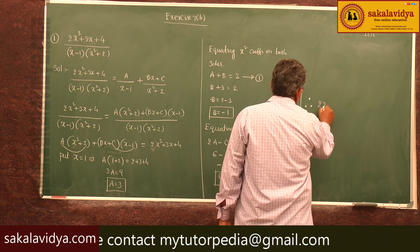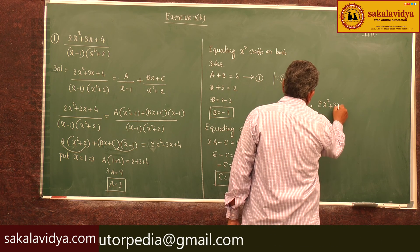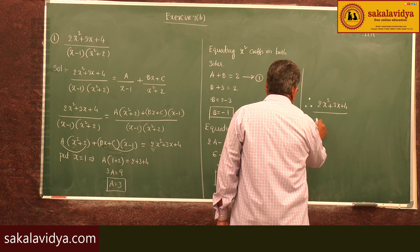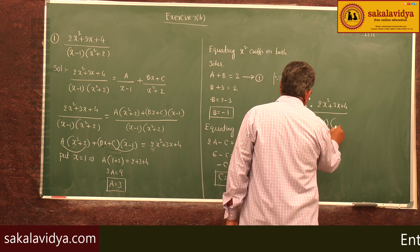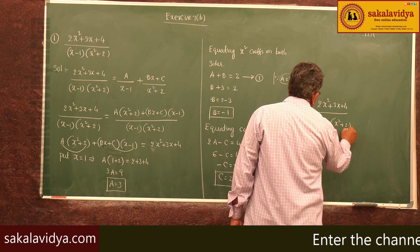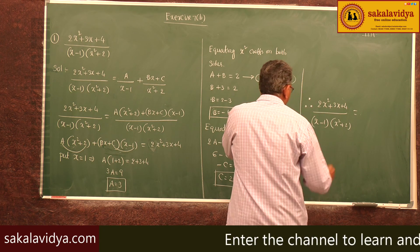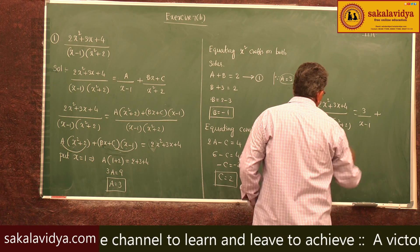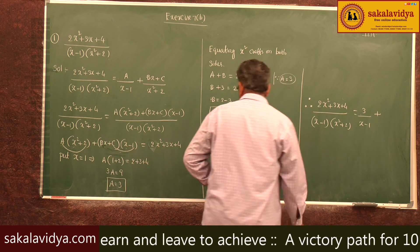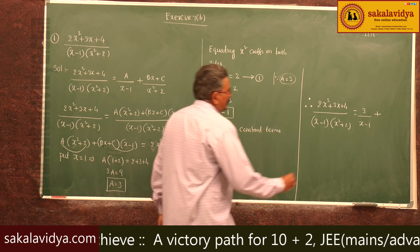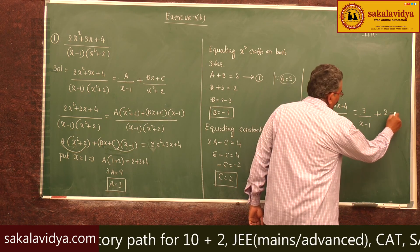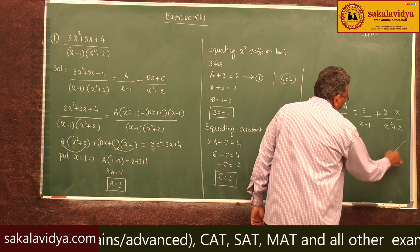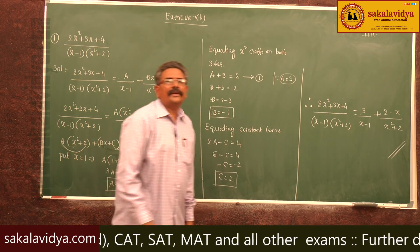Therefore, (2x² + 3x + 4) / [(x - 1)(x² + 2)] = 3/(x - 1) + (-x + 2)/(x² + 2), which can be written as 3/(x - 1) + (2 - x)/(x² + 2). These are the required partial fractions.